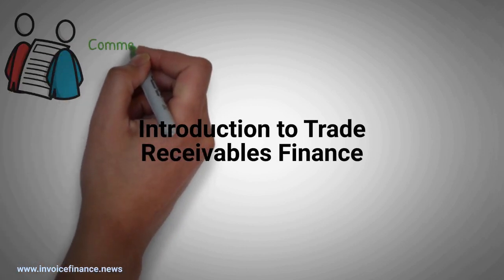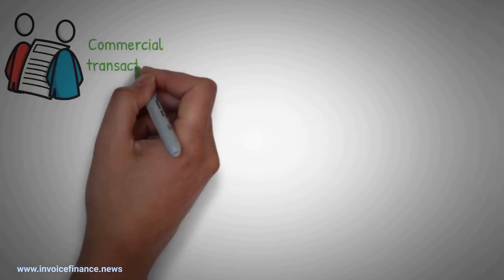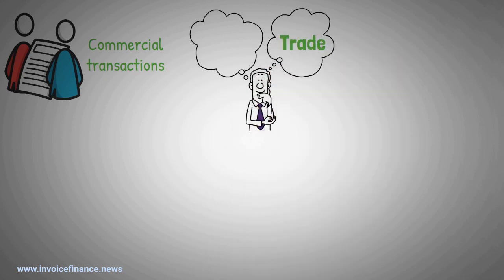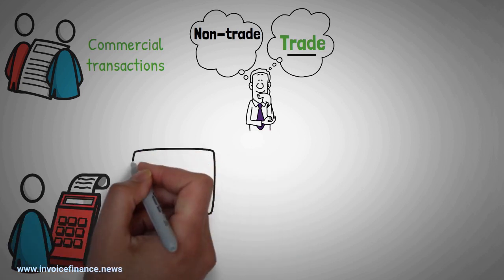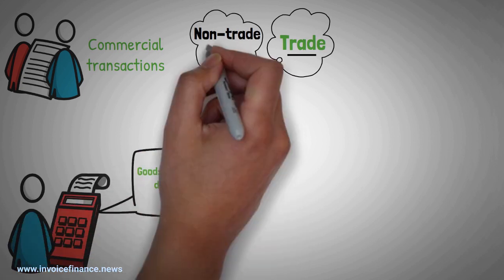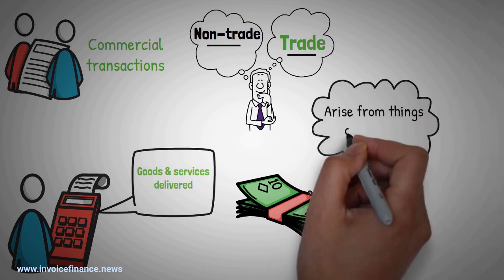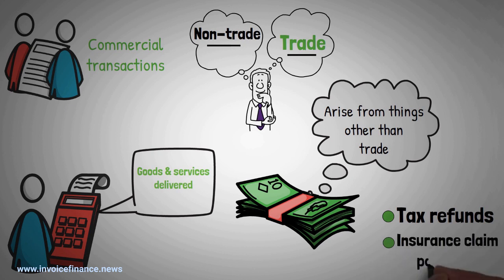Trade receivables are accounts receivables that arise from commercial transactions. A distinction needs to be made between trade and non-trade receivables. Whereas trade receivables are promises of payment for goods and services delivered, non-trade receivables are promises of money that arise from things other than trade. These could include tax refunds or insurance claim payouts.